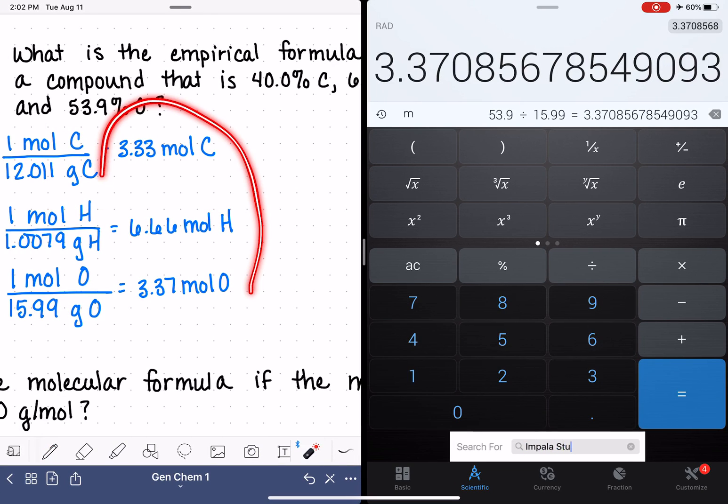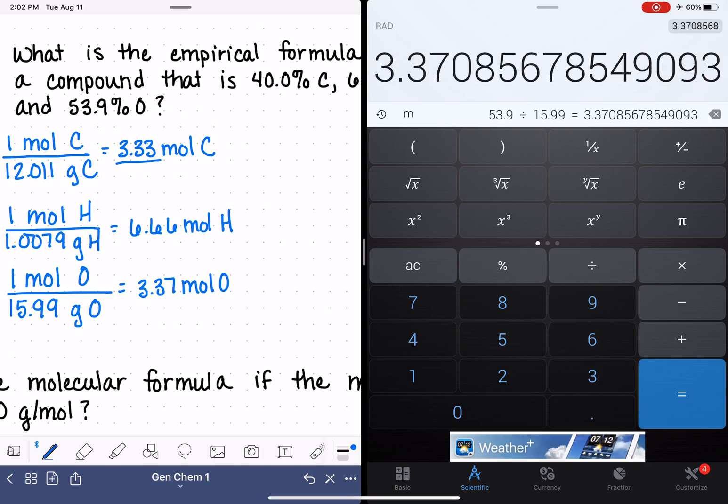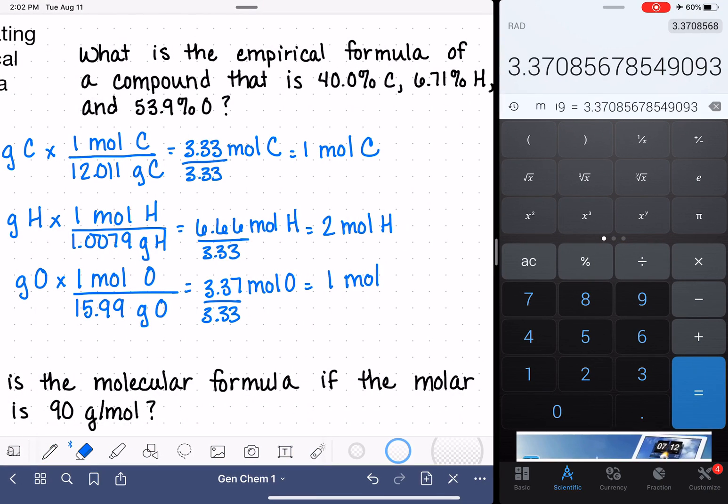And our last step here, looking at all three of these numbers, find the smallest number, divide all of them by that number. That's going to give us one mole of carbon, two moles of hydrogen, and about one mole of oxygen. So our empirical formula here is CH2O.